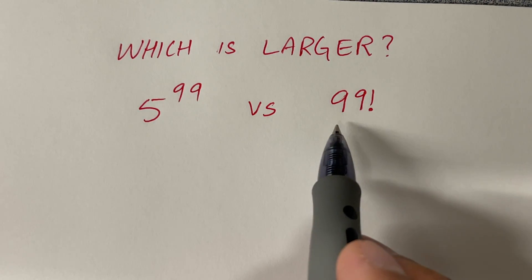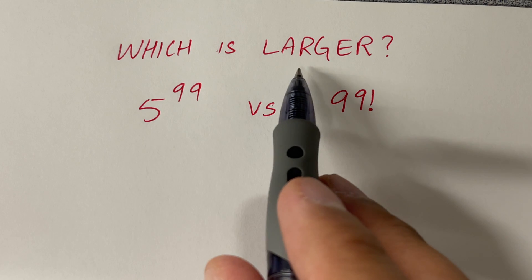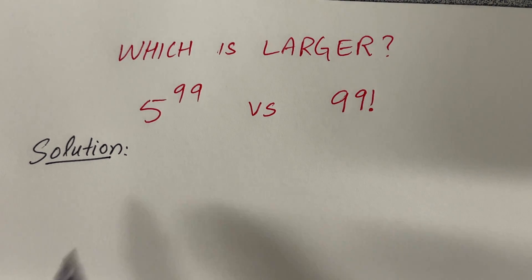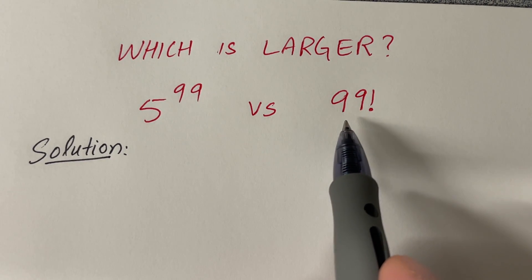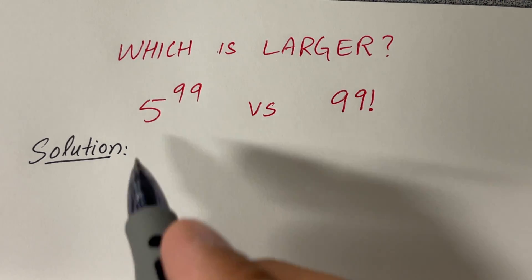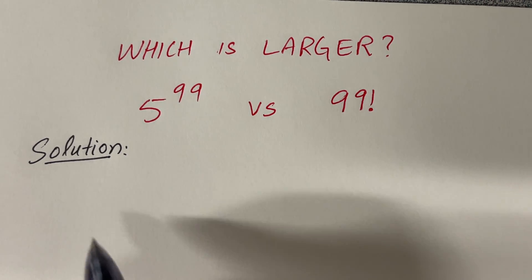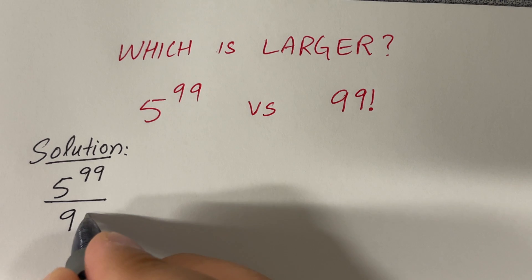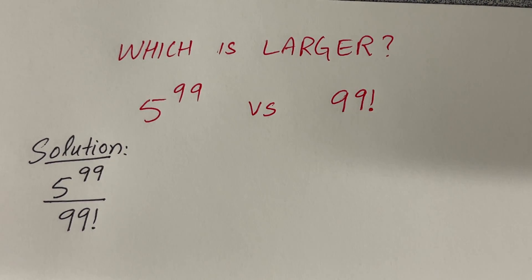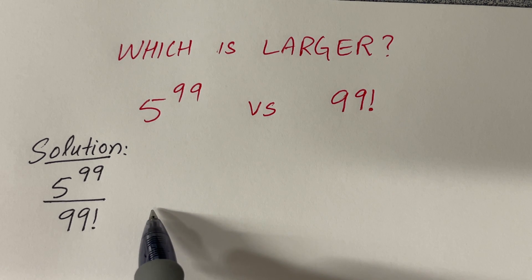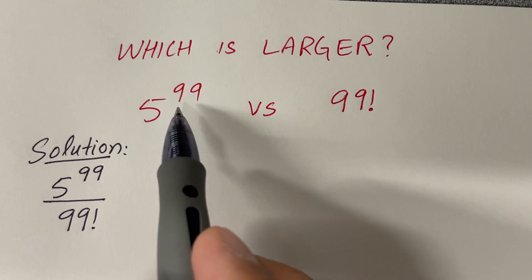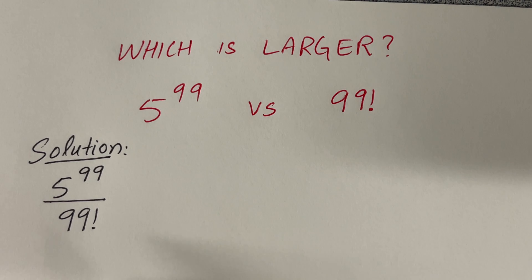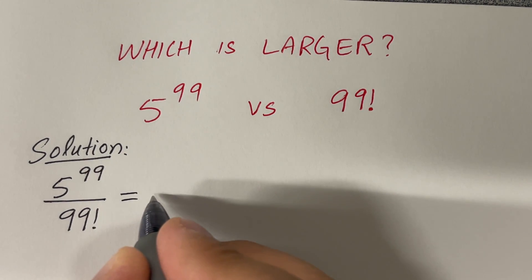In this video we are given two big numbers and we want to see which number is larger. Since these numbers are too big to plug into a calculator, but it's not difficult to do manually, I'm going to start with the ratio: 50 raised to the power 99, divided by 99 factorial. If the ratio is less than one, then the numerator is less than the denominator; if greater than one, then the numerator is greater. Our goal is to determine whether this ratio is greater than or less than one.